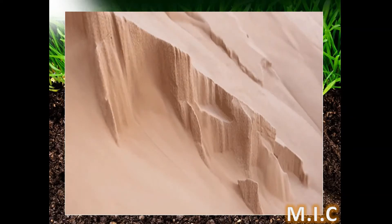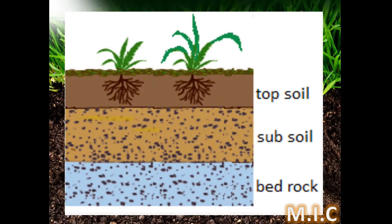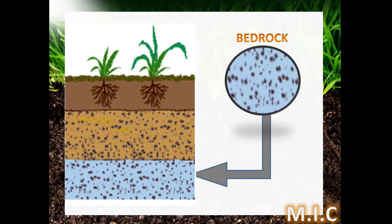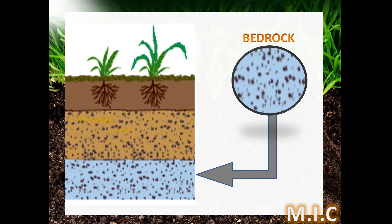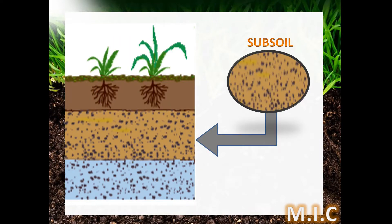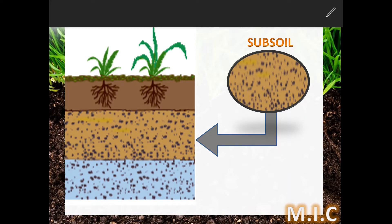There are three layers of soil. At the bottom are the biggest pieces of rocks, which we call bedrock. The soil above the bedrock is called subsoil.